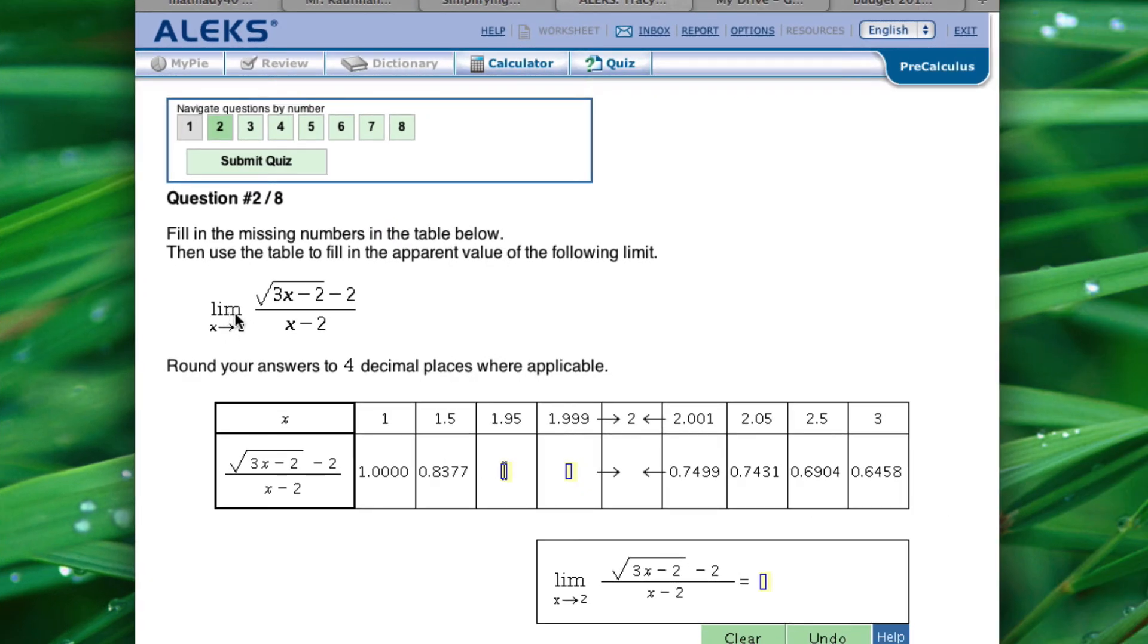In this case, they want to find the limit as x approaches 2 for this function. Again, you can see that 2 minus 2 would give you 0 in the denominator. So we can do this numerically by plugging it into the table. So we're going to start at 1 and go towards 2 and then start at 3 and move towards 2 in our table.